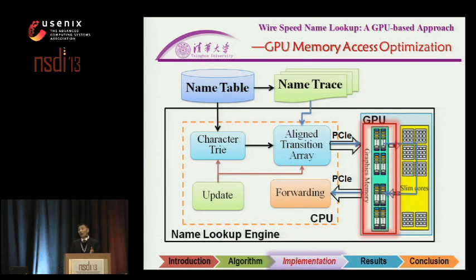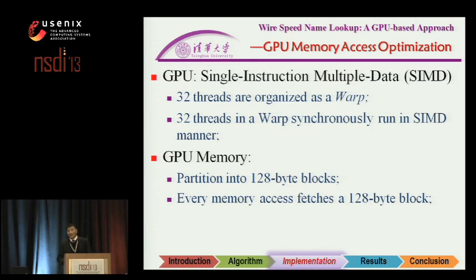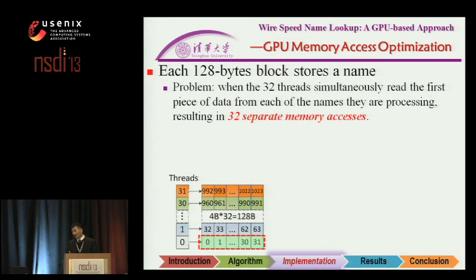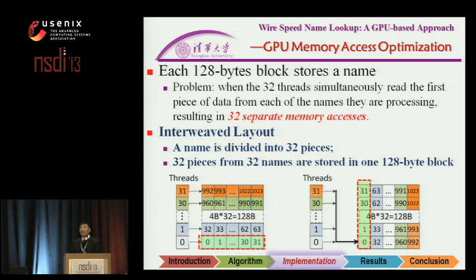The second parameter to optimize is memory access — specifically, improving memory operations within GPU memory. GPU operates in SIMD mode with data granularity of a warp. Each warp consists of 32 threads that operate synchronously, and GPU memory is divided into blocks of 128 bytes each. We have two options for storing names: horizontally, which requires 32 memory accesses to get a whole name; or vertically with an interleaved layout, where only one memory access is enough to get the whole name, greatly saving memory accesses.